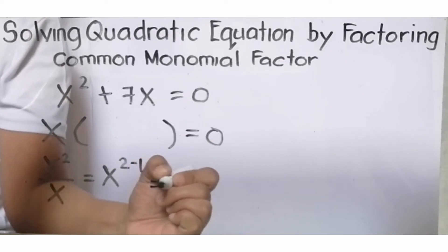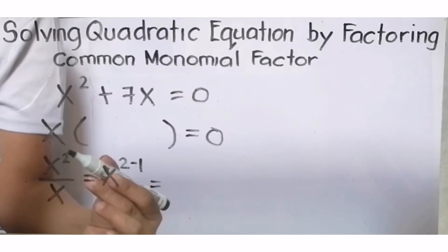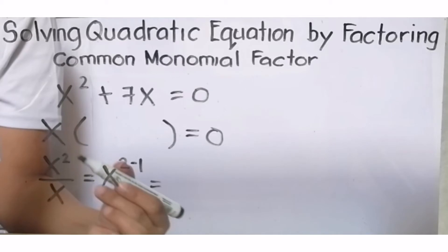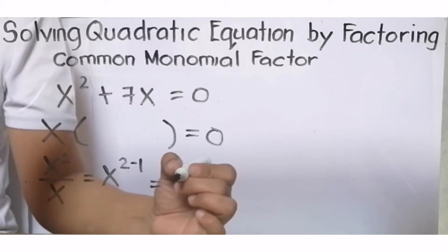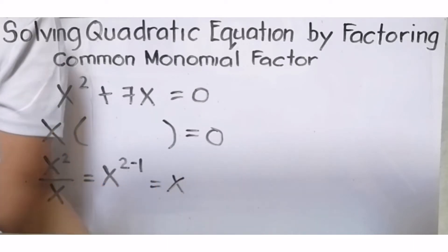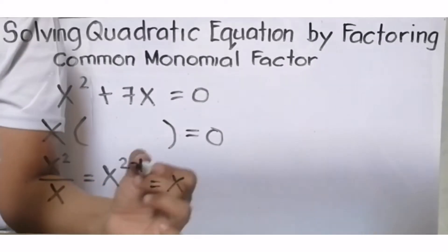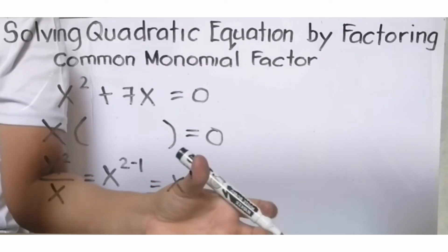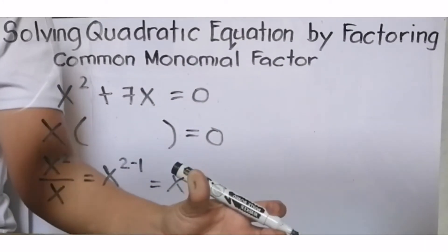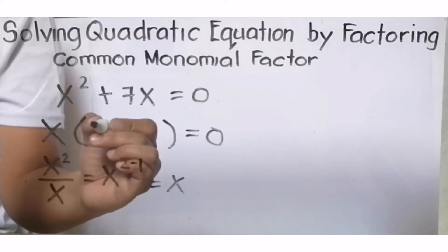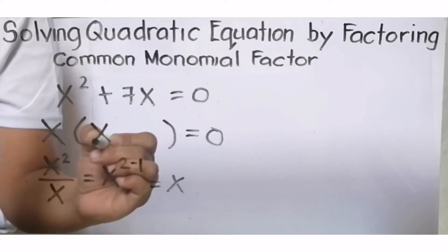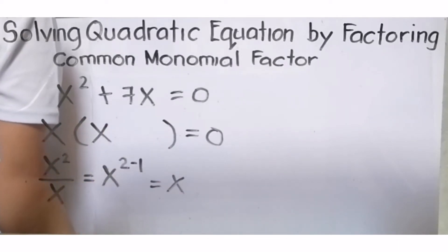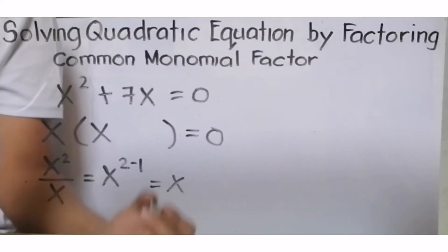Ngayon, pag nag-divide tayo, sinusubtract lang natin ang exponent ng numerator to the denominator. We will have here x. Kasi x raised to 1 dapat ito, pero hindi na nga natin ilalagay ang ating exponent na 1. Ibig sabihin, may naiwan pa tayong x dito sa loob ng ating parenthesis.